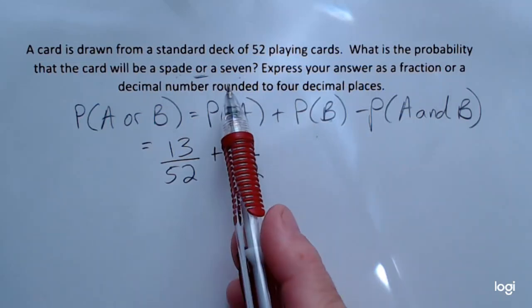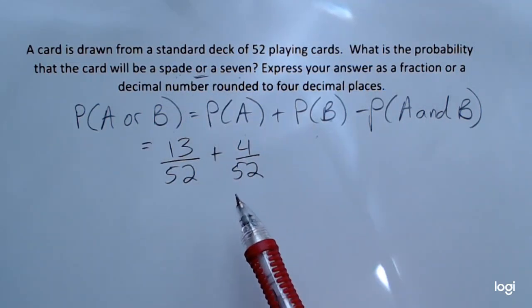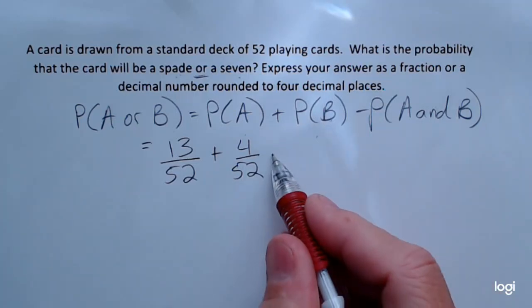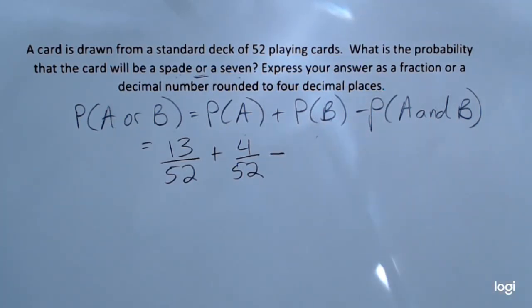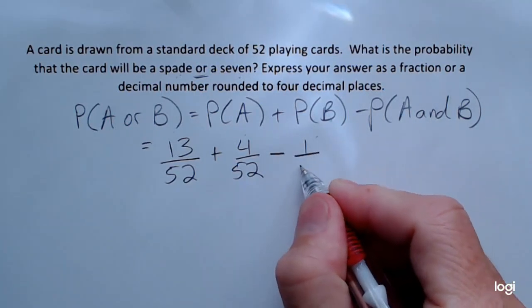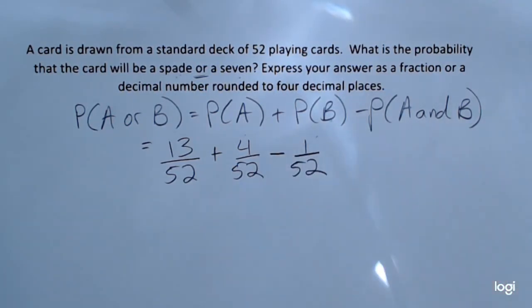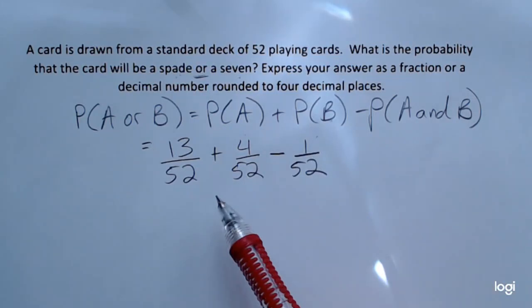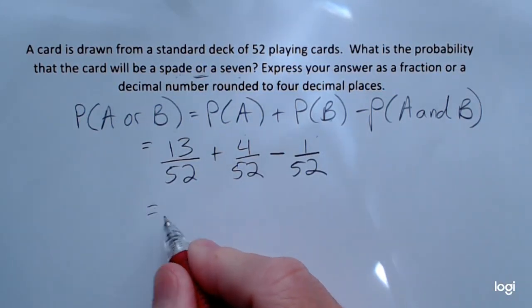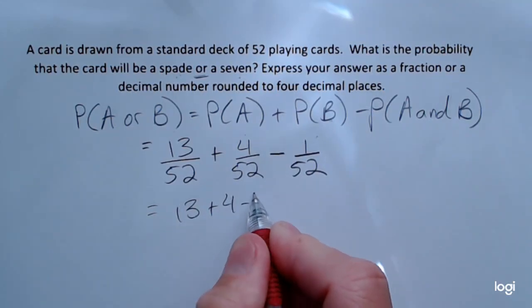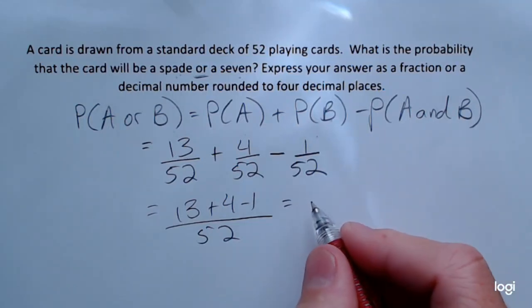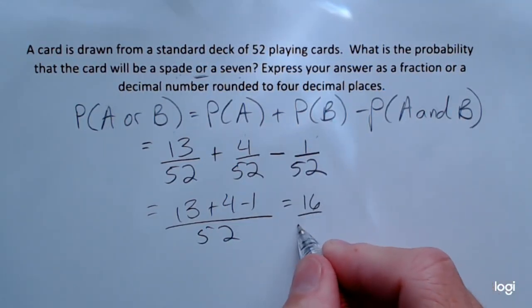Now, because we can get a seven of spades, we've double-counted here, so we need to subtract out where we've double-counted. There is one seven of spades out of a deck of 52, and I need to subtract that out. Leaving it all as one fraction, that's going to be 16 out of 52.